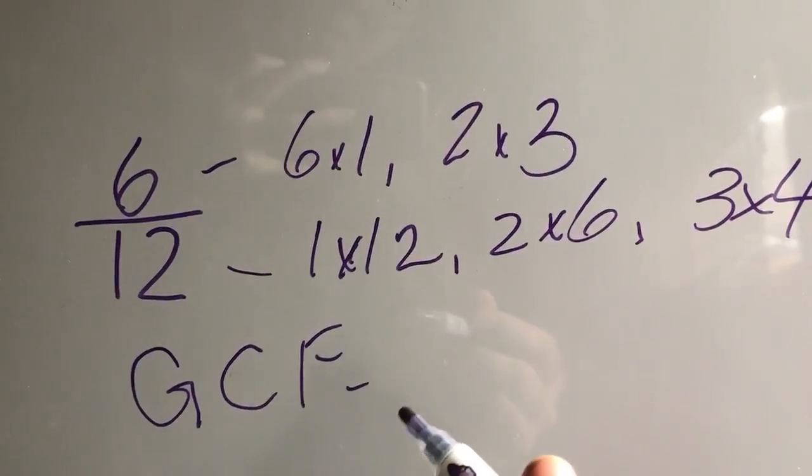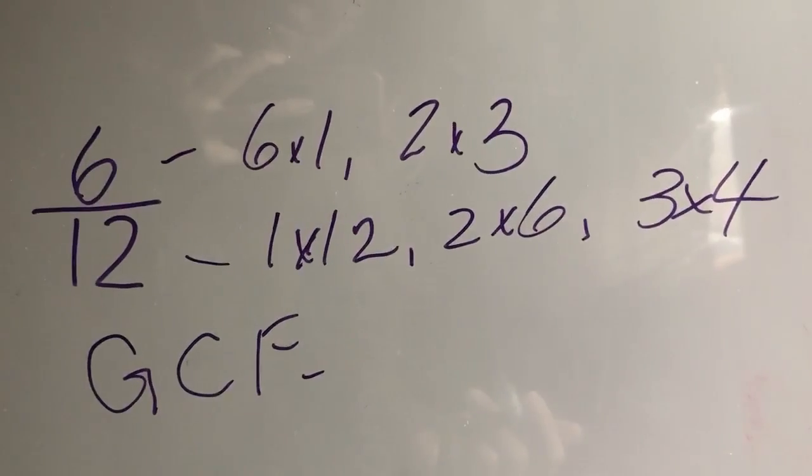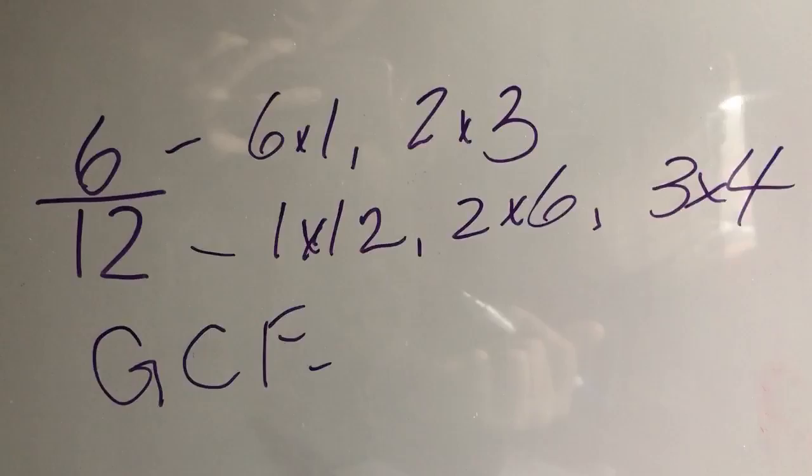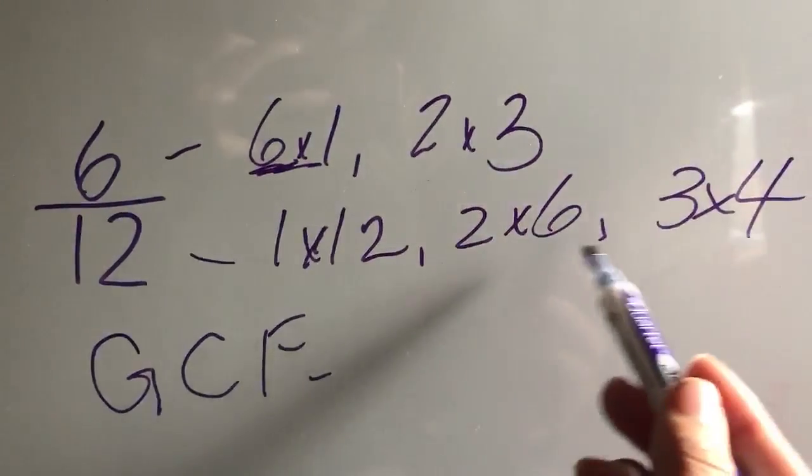Okay, you have to find now the greatest common factor. What is that? That is the largest number that is the same in both of the numerator and denominator's factors. Okay, so here's 6, that's the largest number out of these numbers. Is there a 6 here?